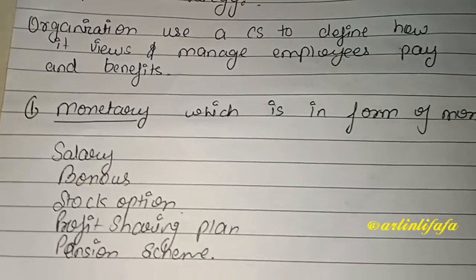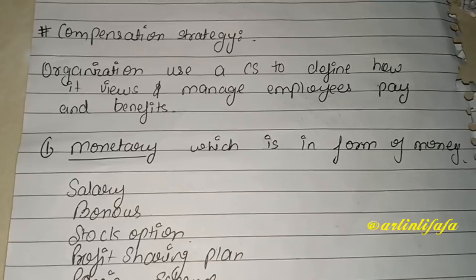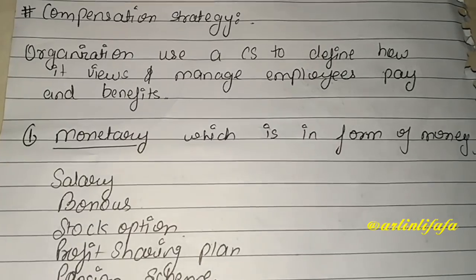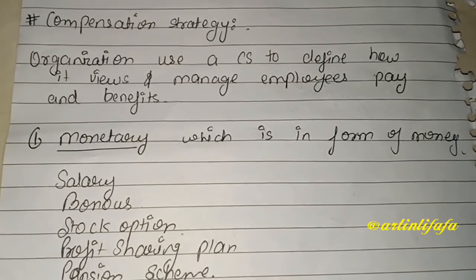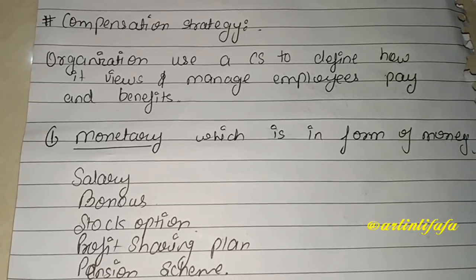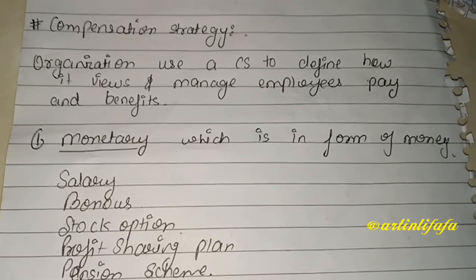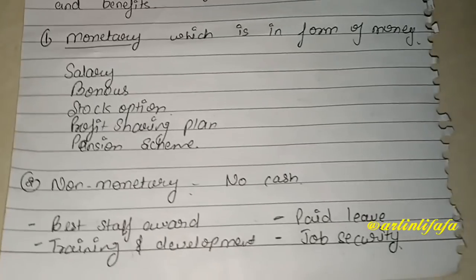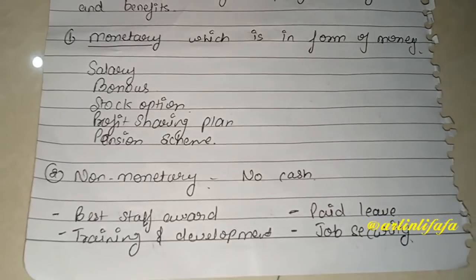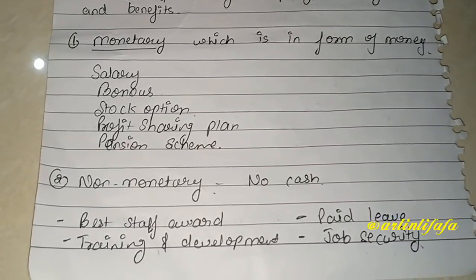Next ہے compensation strategy۔ Organization use compensation strategy to define how it views and manages employees' pay and benefits۔ اس میں ہم دیکھتے ہیں کہ کیسے salary وغیرہ کو manage کریں اور کیا کیا benefits ہوتے ہیں۔ یہ دو طرح کی ہوتی ہے: monetary اور non-monetary۔ Monetary وہ ہوتے ہیں جو money کی form میں ہوتے ہیں، non-monetary وہ ہوتے ہیں جو without cash ہوتے ہیں۔